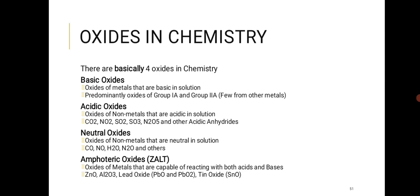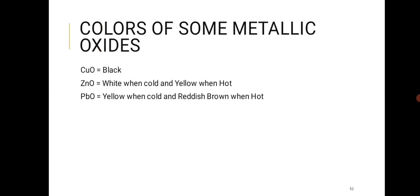Neutral oxides include CO and NO. Note that CO is very poisonous but neutral. Amphoteric oxides — remembered as ZALT — are zinc oxide (ZnO), aluminium oxide (Al2O3), and lead oxide (PbO). For lead oxide, prefer PbO2 if both PbO and PbO2 are listed as options. Colors to note: CuO is black; ZnO is white when cold and yellow when hot; PbO is yellow when cold and reddish-brown when hot.